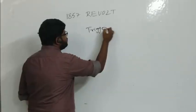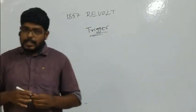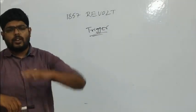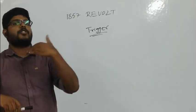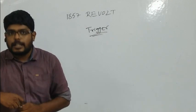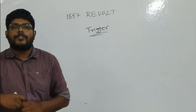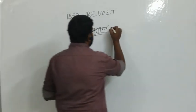To solve this question, note that all the options are reasons for 1857, but the question specifically asks about the trigger. The main thing we need to know is: what do you mean by a trigger? A trigger means the starting point of any big explosion.